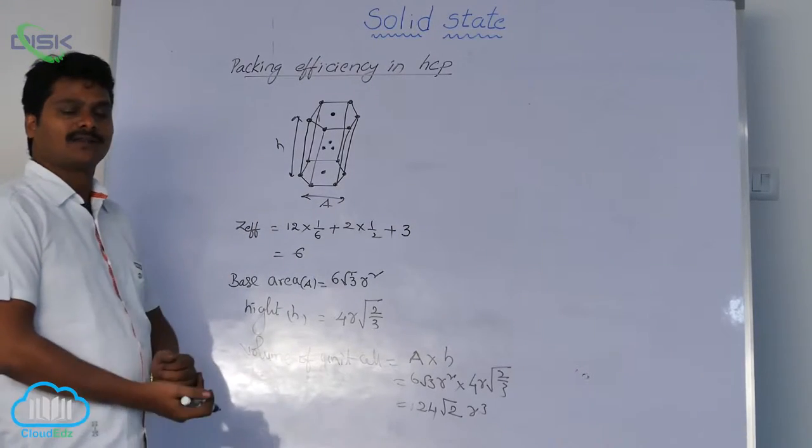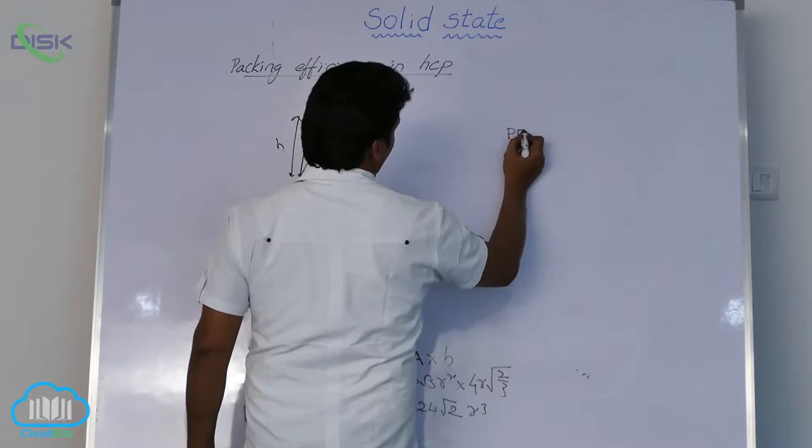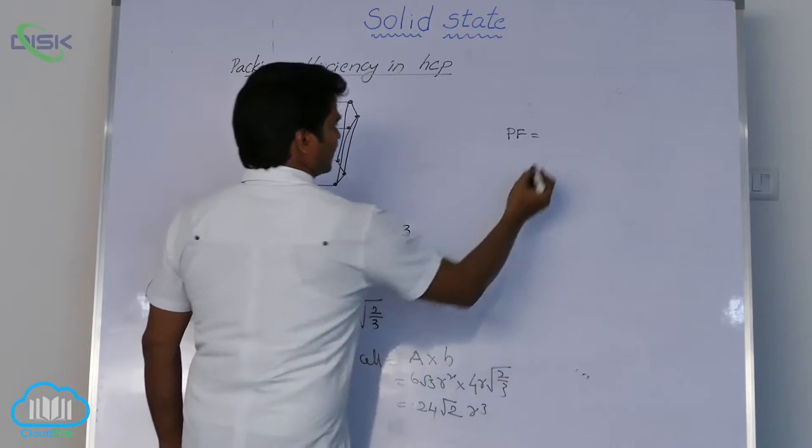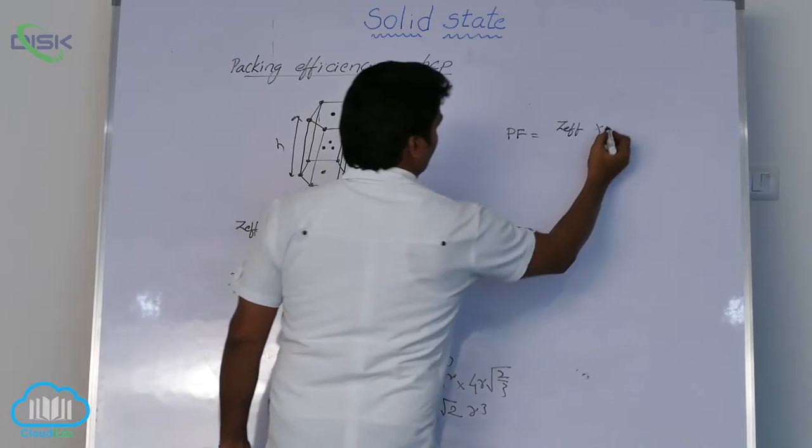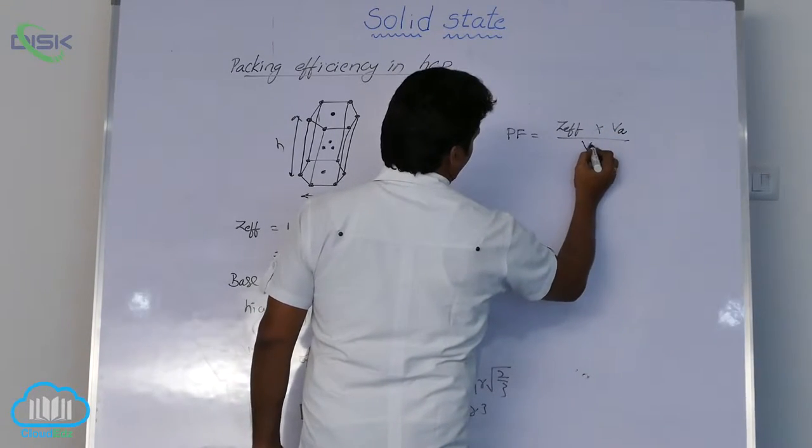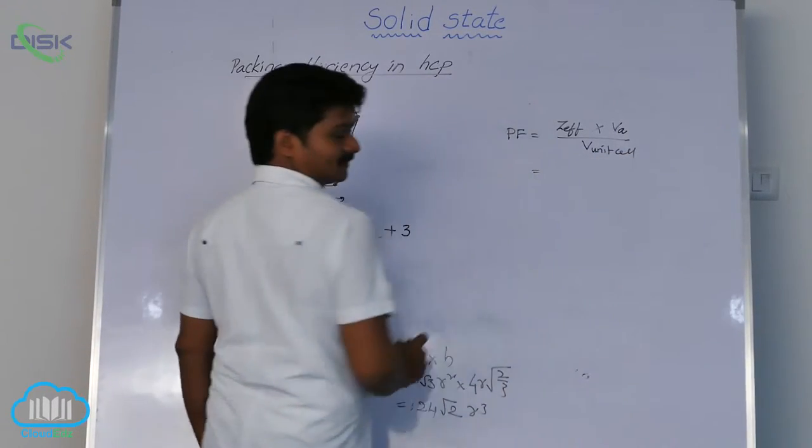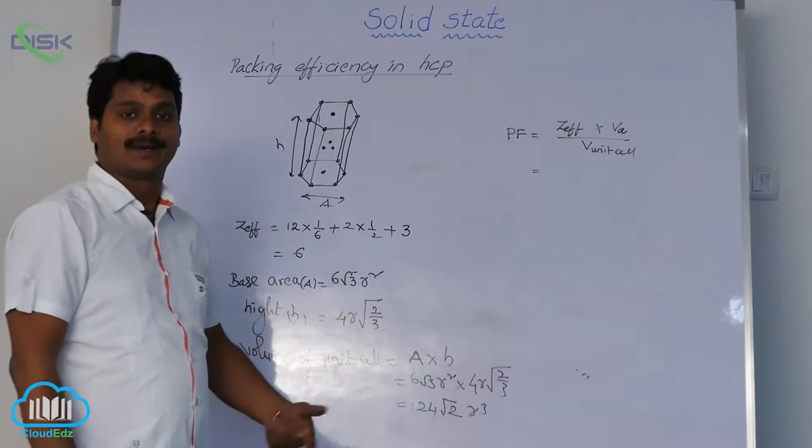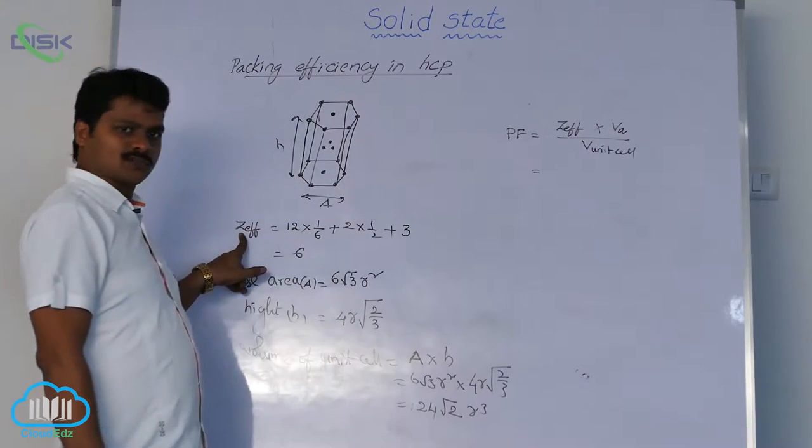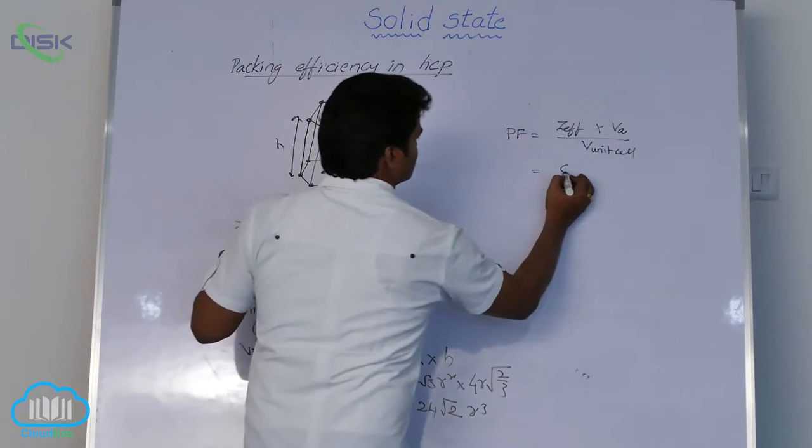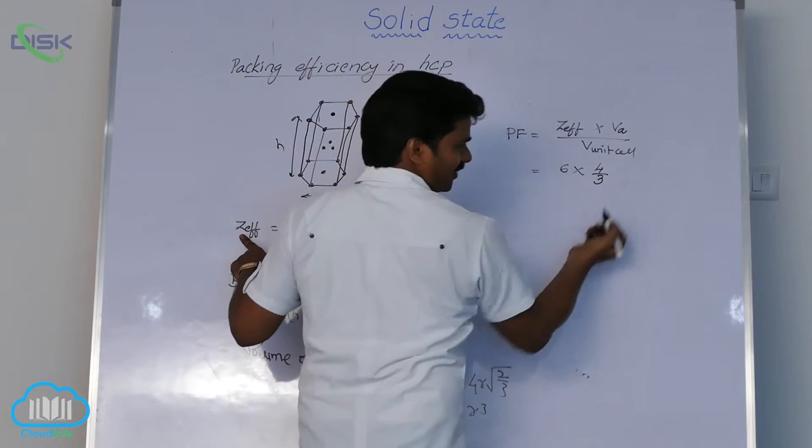So from that volume we can calculate packing efficiency. Packing fraction formula is Z-effective into volume of each atom by volume of unit cell. This is the formula. For any type of unit cell, this is the formula we use for packing fraction. Now Z-effective for hexagonal system, 6.